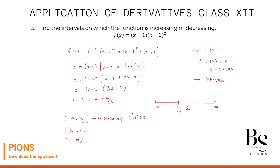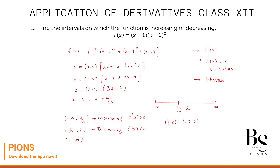For (4/3, 2), choose x = 1.5: f'(1.5) = (1.5 - 2)(3×1.5 - 4) = (-0.5)(4.5 - 4) = (-0.5)(0.5), which is negative. So f'(x) < 0, meaning the function is decreasing on (4/3, 2).